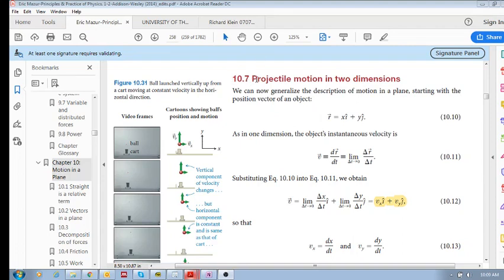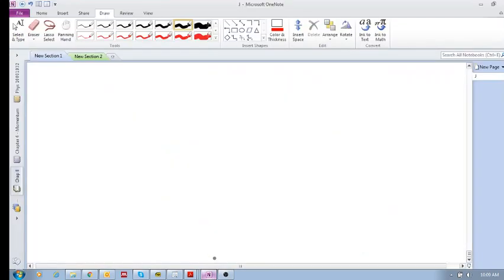Let's look at 10.7, projectile motion in two dimensions. We're in chapter 10, and the idea of chapter 10 is that we're looking at motion in the plane, which means that we can have some kind of motion that is curved, like projectile motion. Now we've already seen projectile motion earlier on when we had that ball drop with the cart, and we saw the ball have this kind of motion.